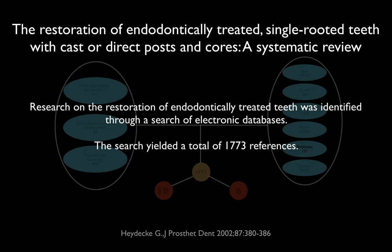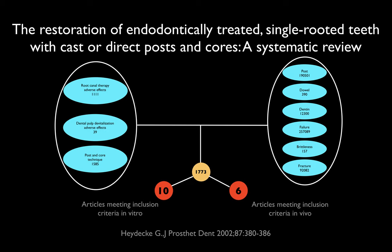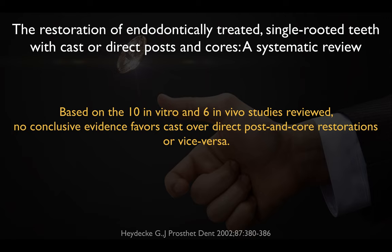A great systematic review of endodontically treated single-rooted teeth with cast posts or direct posts was done by Haydinki. They looked at 1,773 references in the database, and out of those found 10 articles meeting inclusion for in vitro studies and six articles for in vivo studies. Based on these 16 studies, there was no conclusive evidence that favored a cast over a direct post and core restoration, or vice versa — so both approaches work.